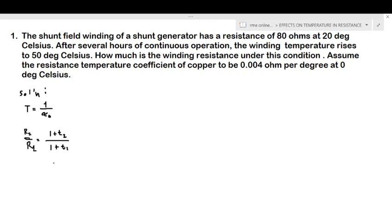Then we have the other one: R2 is equal to R1 times 1 plus alpha R1 times delta T, where delta T is equal to T2 minus T1.